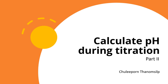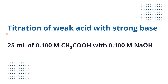Now we move on to part two: how to calculate pH during titration. This one we will look at titration of weak acid with strong base. We use acetic acid, which is a weak acid, instead of hydrochloric acid from part one. We use 25 ml of 0.1 molar acetic acid to titrate with 0.1 molar sodium hydroxide.